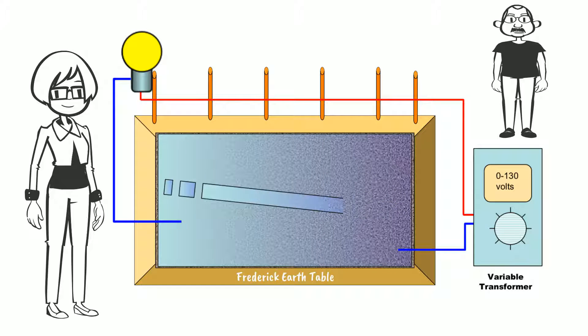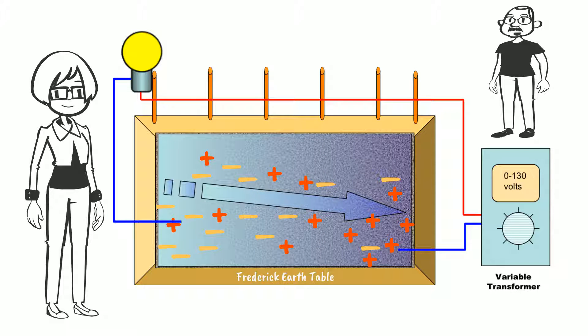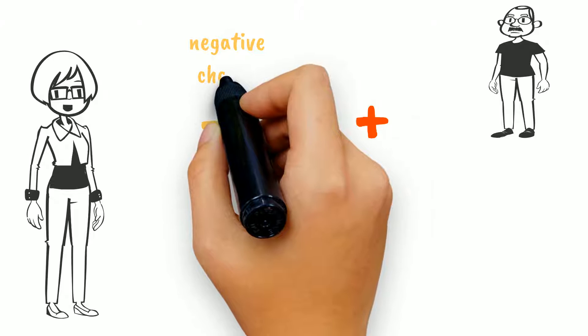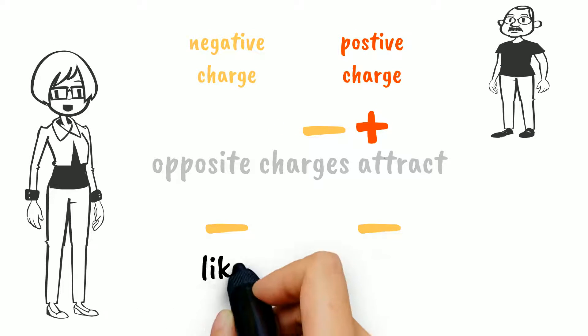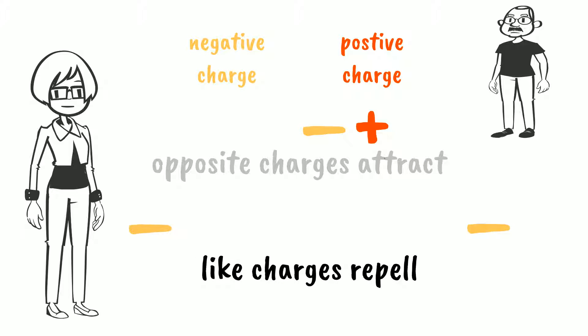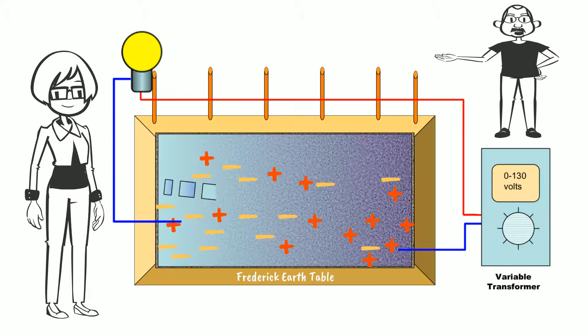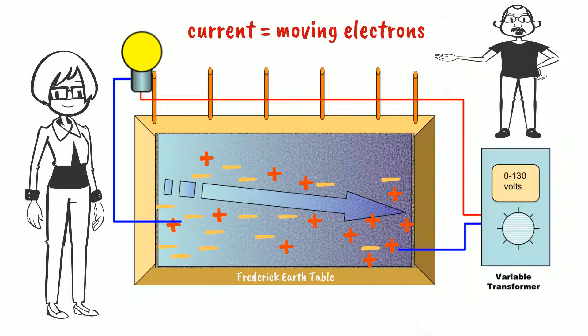If we could see the electricity, this is what it might look like. There would be a gradient of electrons along the length of the earth table flowing through the moist soil. As many of you may recall from high school physics, opposite charges attract, and like charges repel. The negatively charged electrons are moving along the soil and this creates a current. The definition of a current is moving electrons.